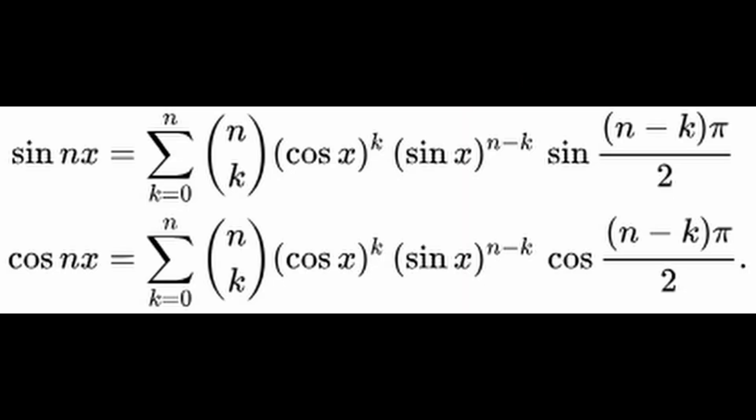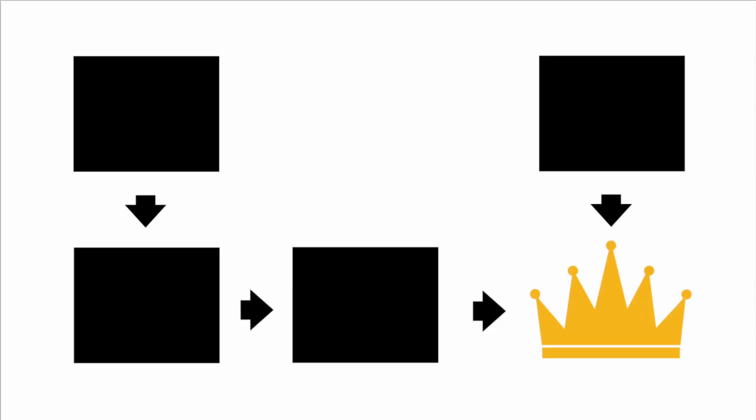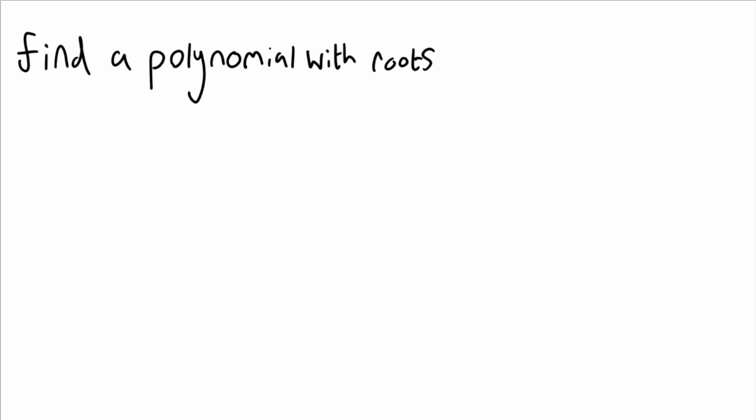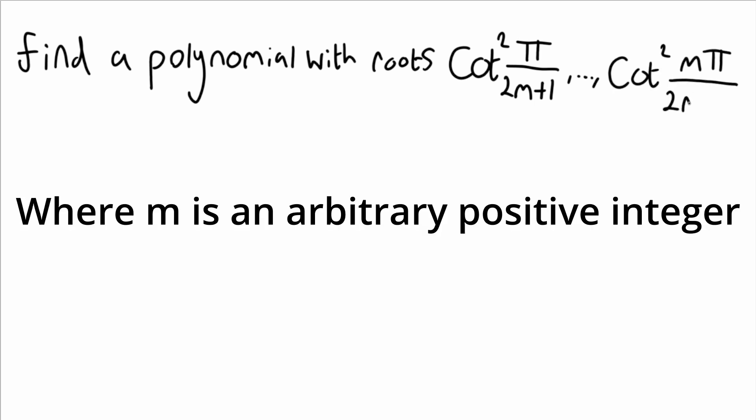Anyway, something interesting about Viette's result is the extra term at the end of each of his statements. Functionally, what they do is make every other term zero and determine the sign of the non-zero terms. With that, we've reached the first landmark on our route, and we're going right into the next one. Our next goal is to find a polynomial with roots cotangent squared of pi over 2m plus 1 through cotangent squared of m pi over 2m plus 1.